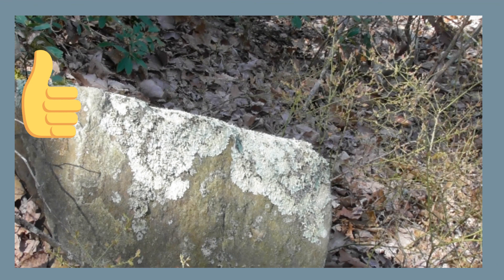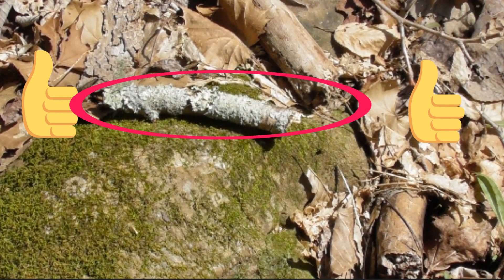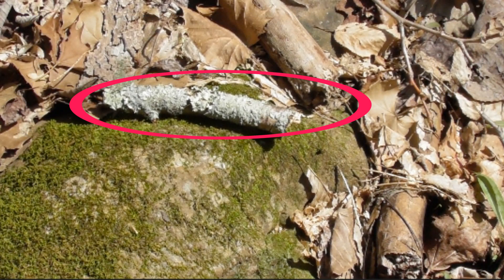The algae or cyanobacteria help the fungi by producing carbon compounds that they use. In return, the fungi benefit the algae or cyanobacteria by protecting them from the environment, and also help gather moisture and provide an anchor.